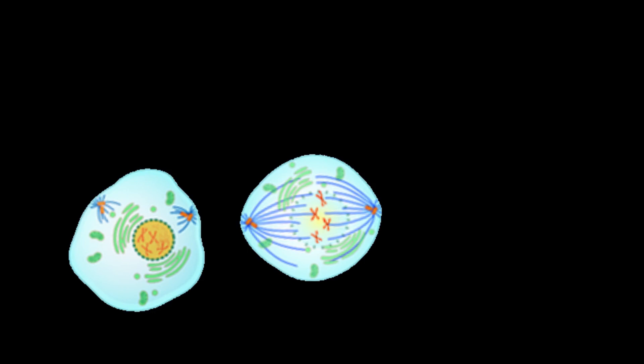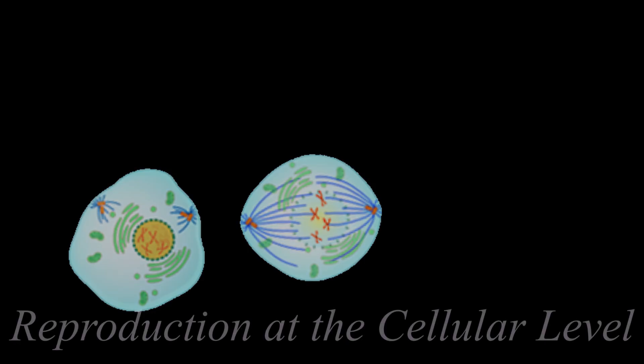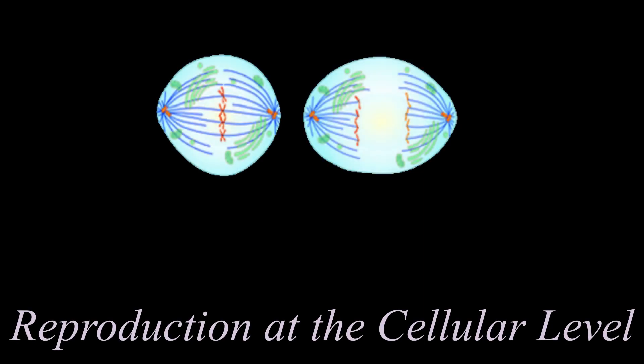Welcome back to Concepts of Biology. We'll continue to read Chapter 6, Reproduction at the Cellular Level.